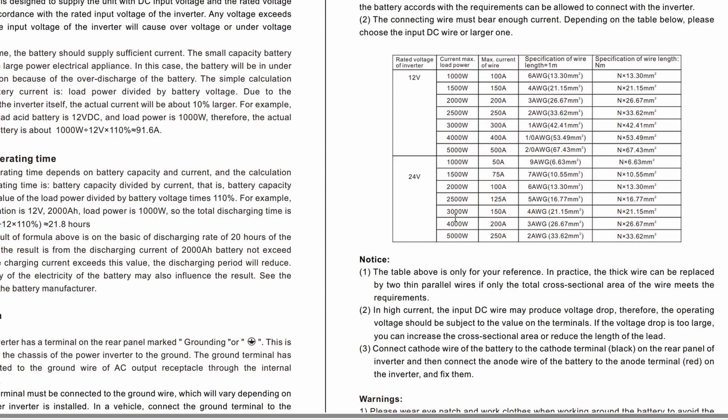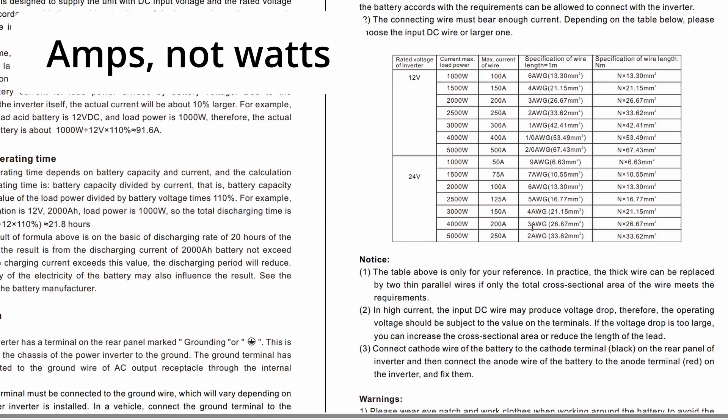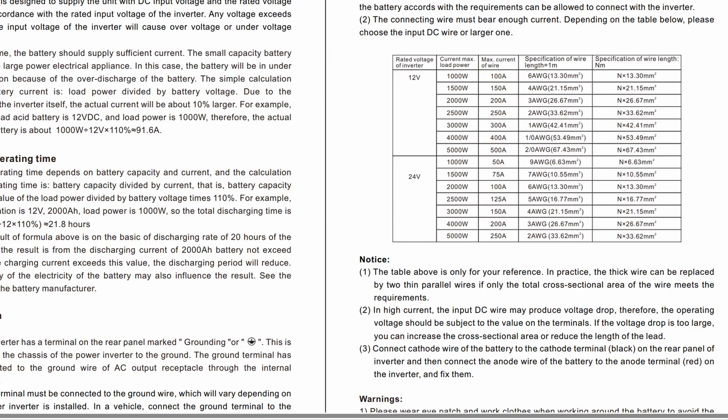If we assume that we're going to design to the maximum current that this inverter could draw, which would be the 4000 surge wattage, if we look at 4000 watts they show a max current of 200 amps but they show a wire size of 3 AWG, and 3 AWG will not carry 200 watts of power, there's no way.